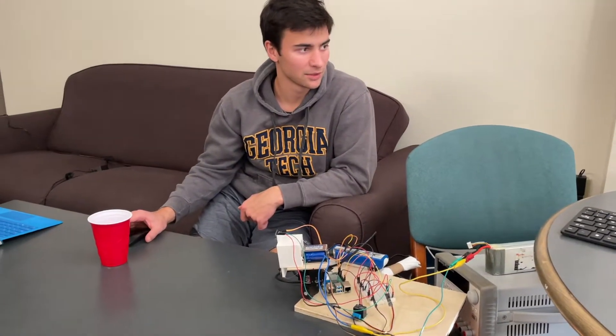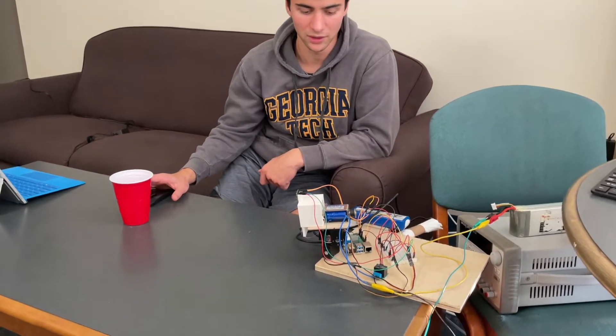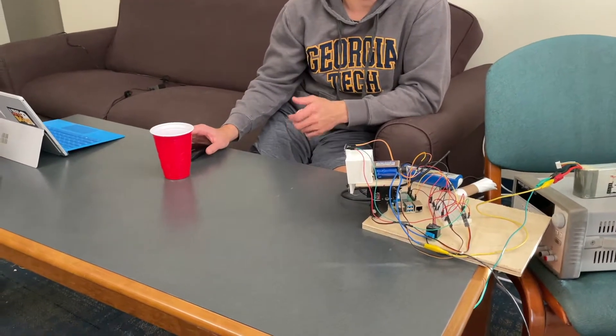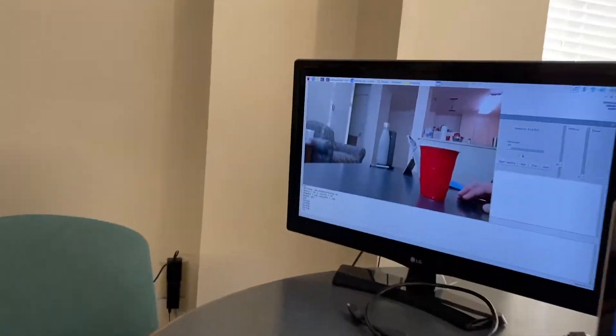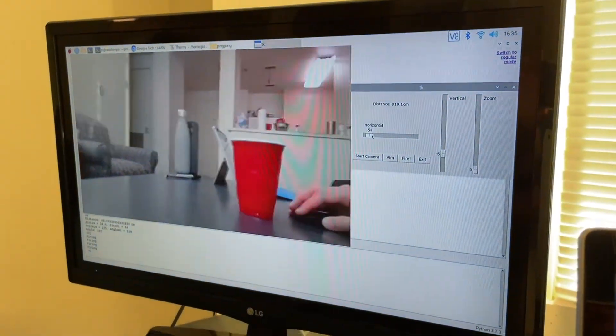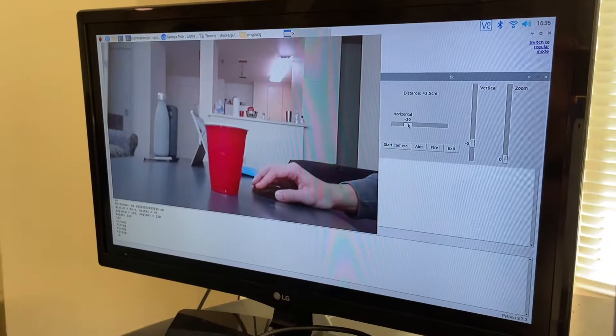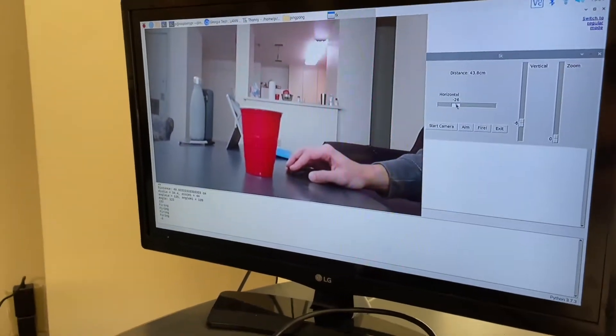Alright so we're going to demonstrate how to use the ping pong ball shooter here. So the goal is to get this ping pong ball shooter to shoot the ball into this cup. And so what you have to do first is horizontally align it with the cup so it knows which cup you're trying to get the ball in.